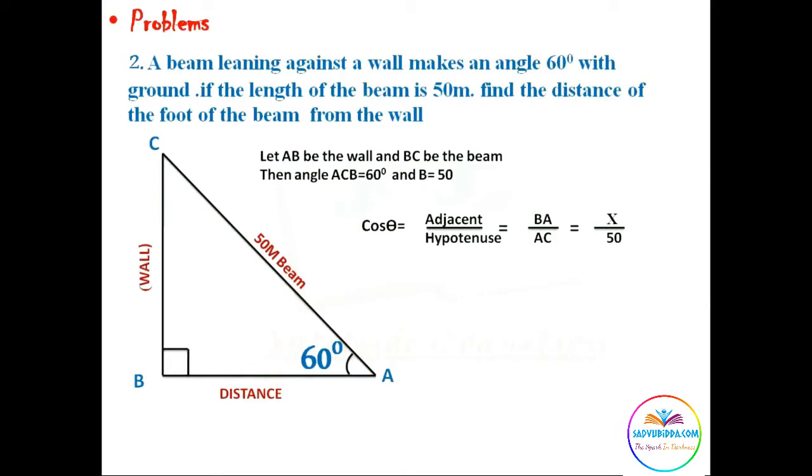Consider the distance as x and AC is given 50 meters. Cos 60 equals x by 50. Then as we know, cos 60 is one by two, which equals x by 50. From here we can easily calculate x equals 25, which is the required answer.